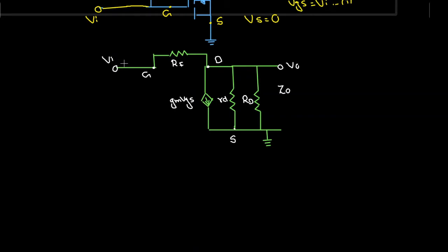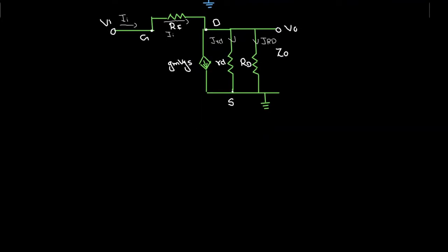We assume an input current Ii flowing into the gate node. The same current flows through RF. At the drain node, Ii divides: some goes through the drain resistance rd (lowercase) and some through RD (capital). Applying KCL at the drain terminal, the current flowing into the node equals the currents flowing out: Ii = GmVgs + Ird + IRD.